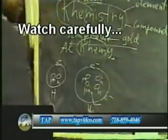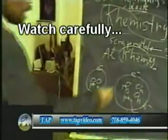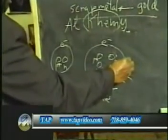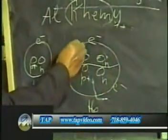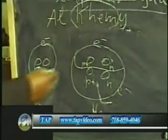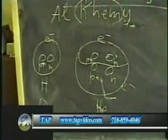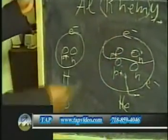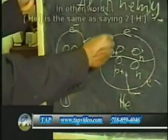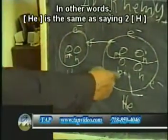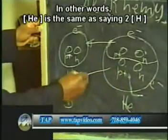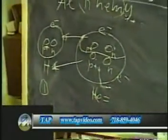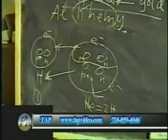Gargott, in developing this model to explain the mystery, observed that helium could be broken down into two units. The top unit is a proton, neutron, and electron — which looks like hydrogen. The bottom unit is also a proton, neutron, and electron — also like hydrogen. So helium equals two hydrogen units.